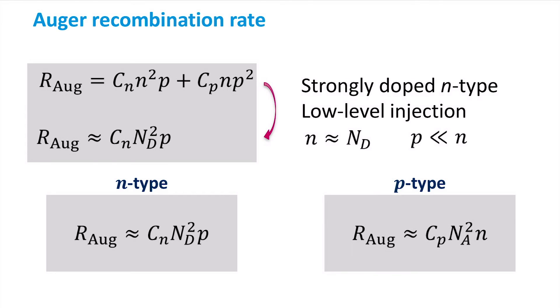The same derivation can be performed for P-type materials, resulting in the following expression. In this case, the recombination rate is proportional to the concentration of acceptors Na² and to the electron concentration N.